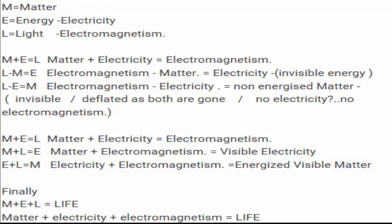So we have M equals matter, E equals energy, which is in this case electricity. L equals light, which is also electromagnetism, because light is an electromagnetic waveform.